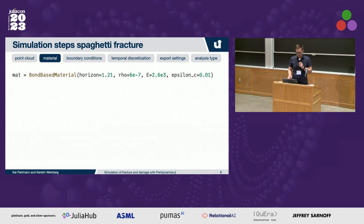We now look at the results. Here we can see the spaghetti bending process, and after a few milliseconds you can see the cracks form. Taking a closer look, you can see some kind of damage on the upper side, and then the first cracks and secondary cracks form. Basically we have multiple pieces, and these cascading cracks we can see in the experiments.